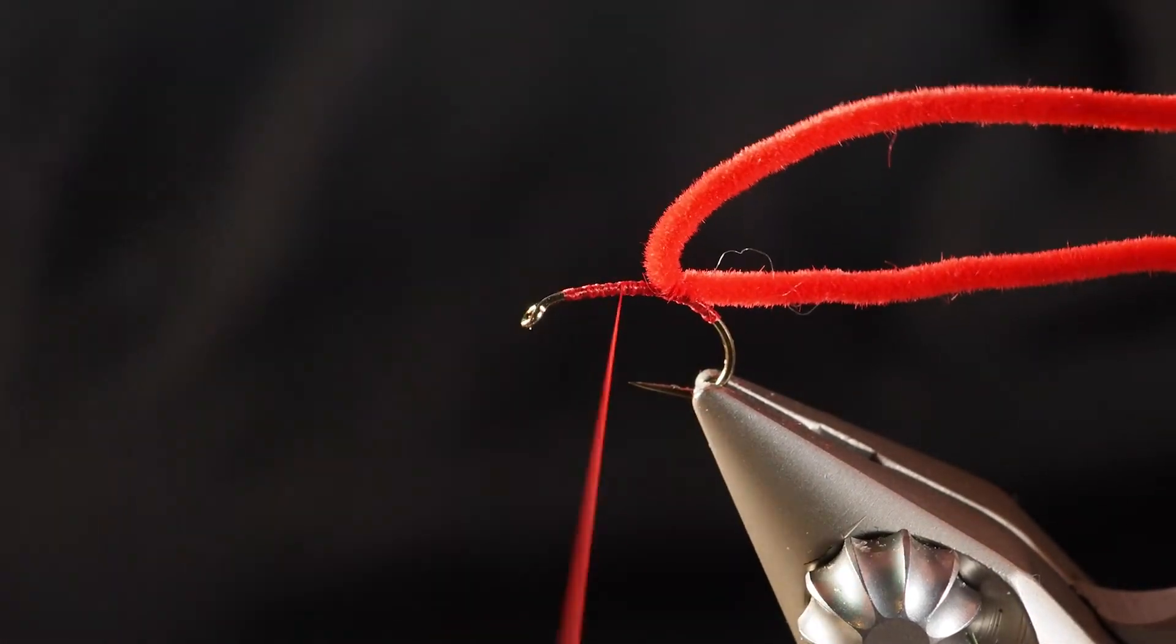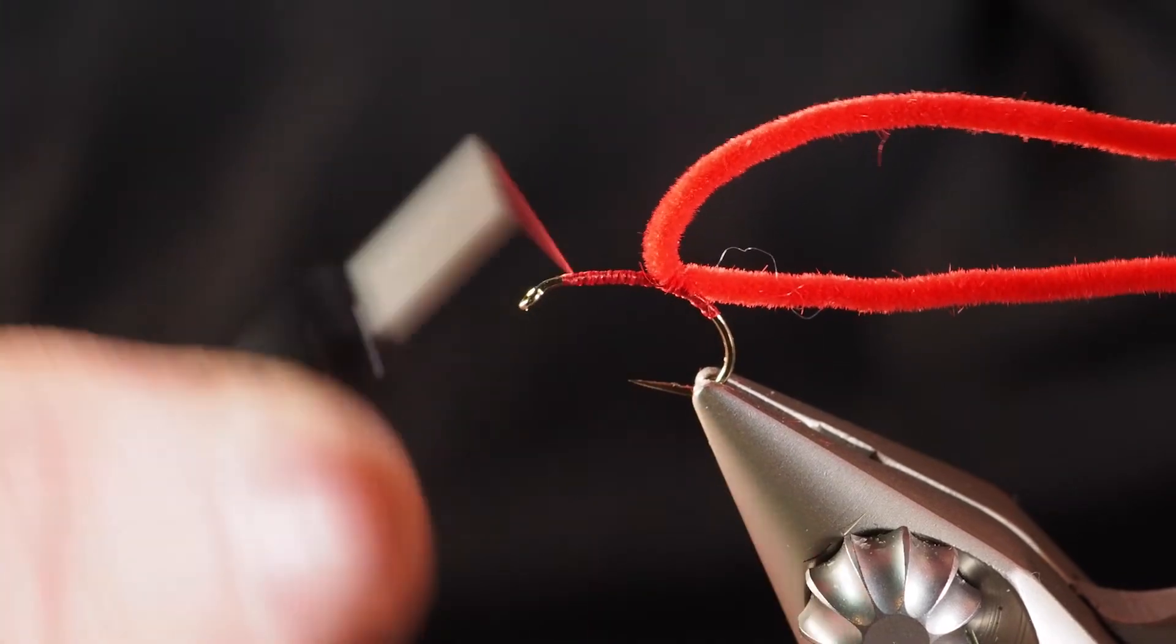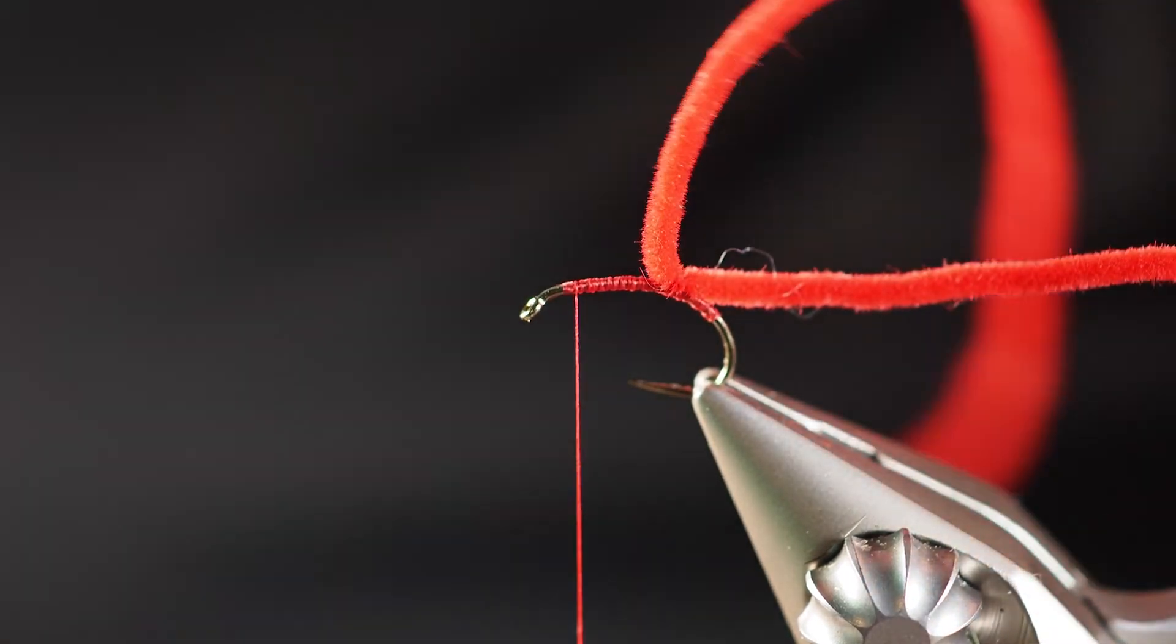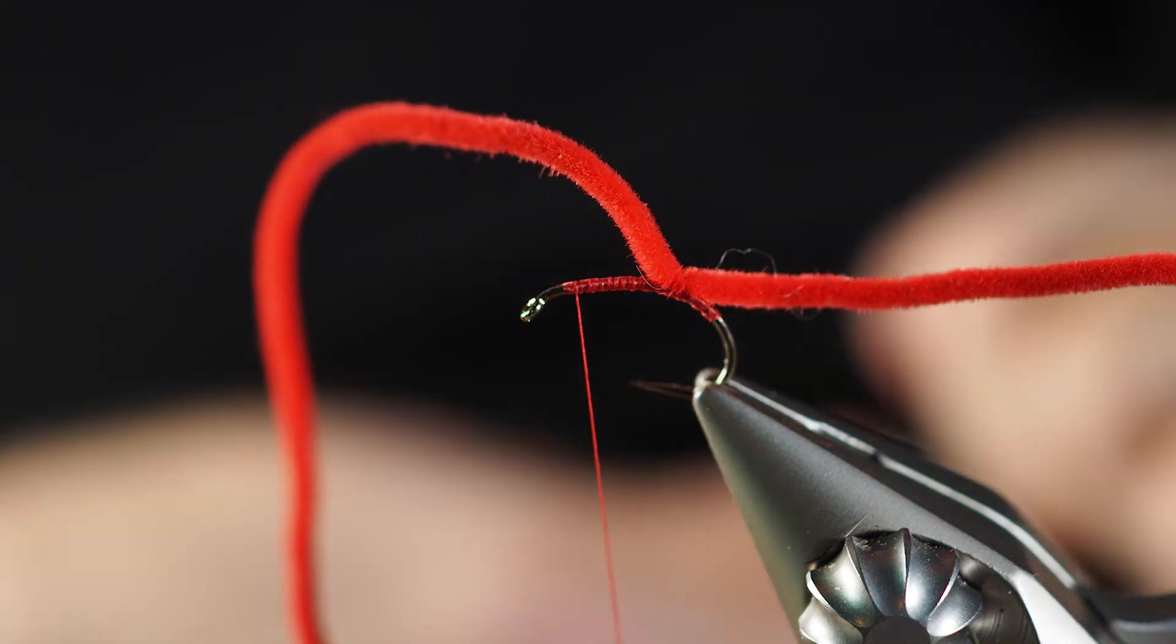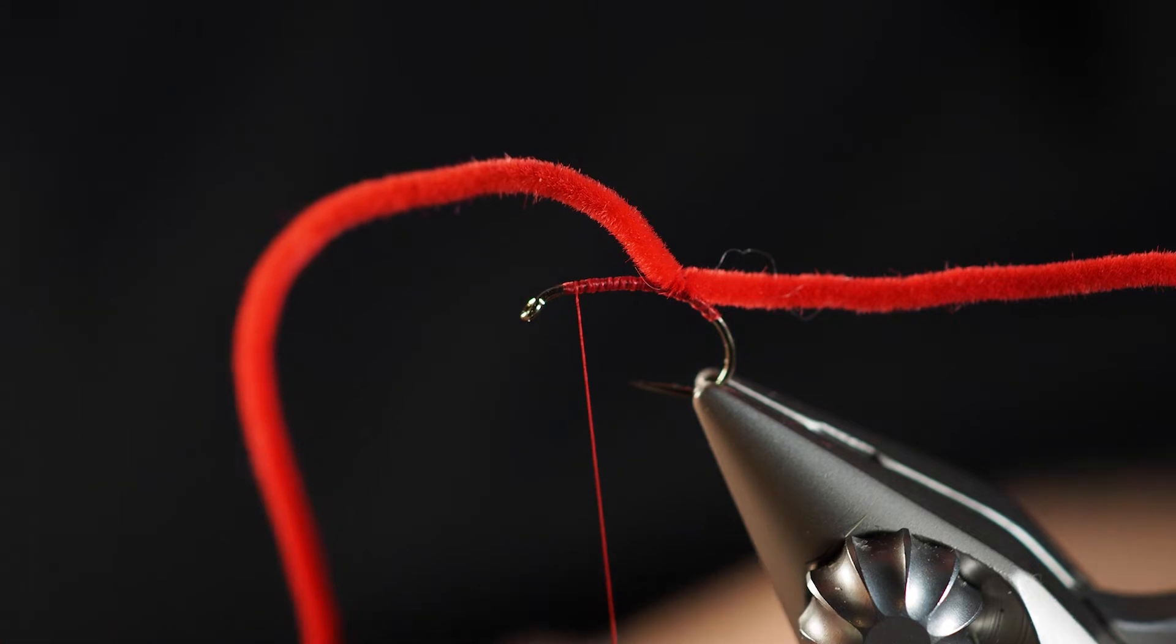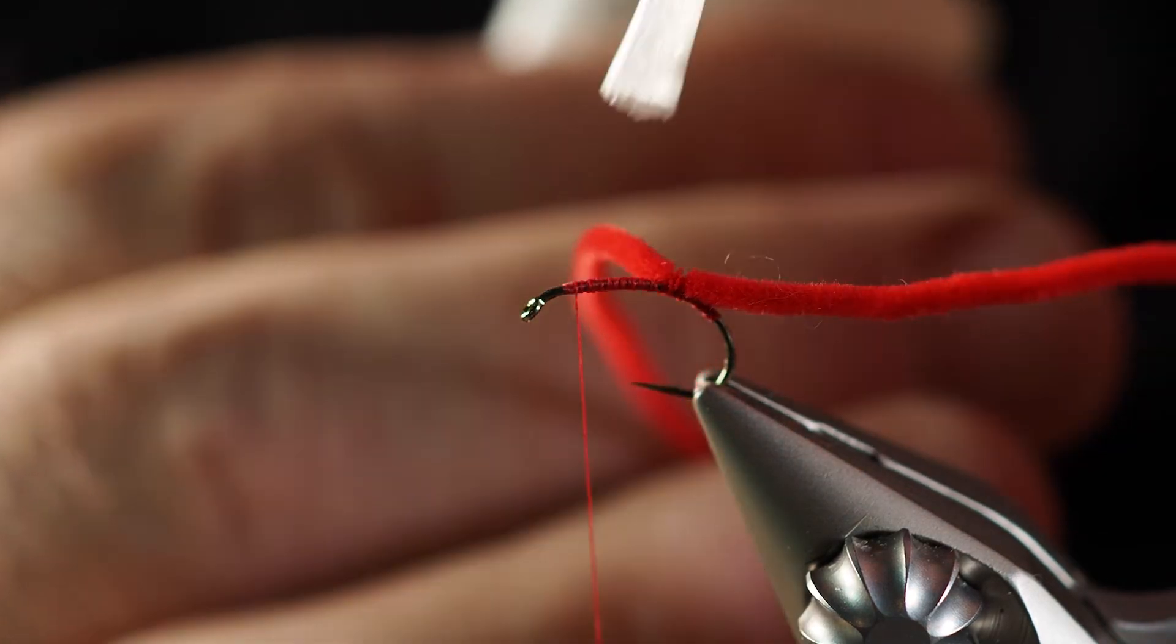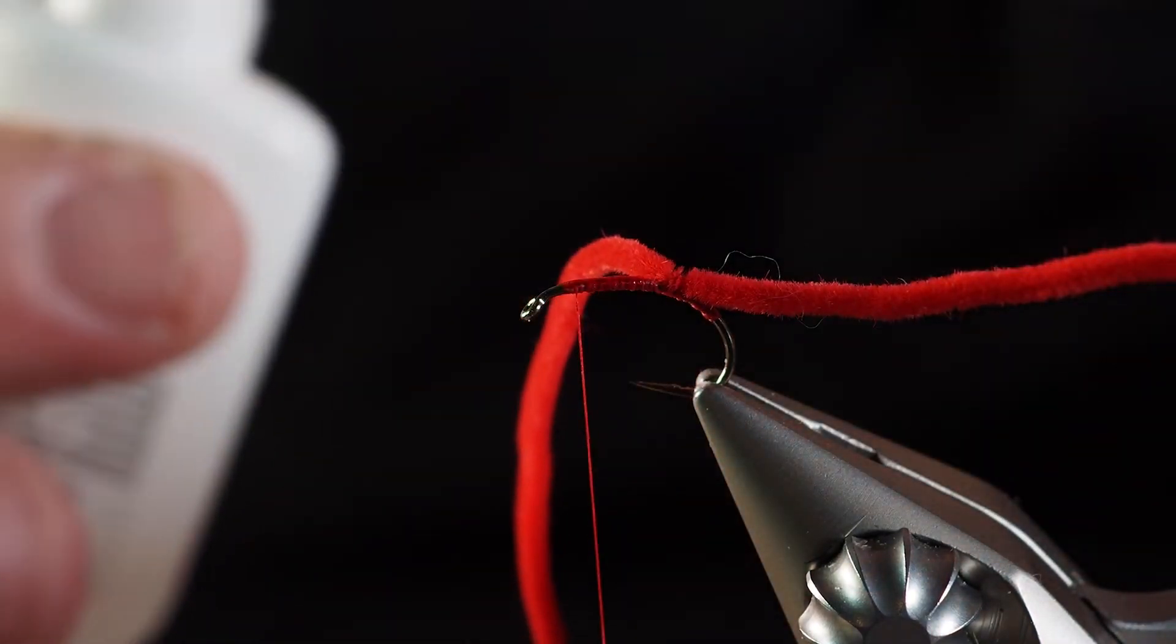From there I'm going to go ahead and wrap my thread a little bit forward here towards the eye of the hook, but not all the way to the eye of the hook. And this is just kind of, this way of tying it is just an alternate method that you can use. As I'm basically, I'm bringing out my z-ment or my super glue here. I'm going to lay just a tiny little film down here on those thread wraps here, just like so.